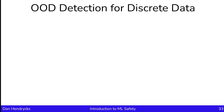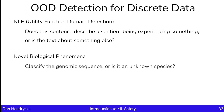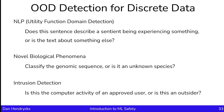One can also study out-of-distribution detection using discrete data. For example, in NLP we could try to determine the domain or provenance of a utility function—does the sentence describe a sentient being experiencing something, or is it about something else? The sentence 'I just got hurt' would have negative utility, while 'the color is red' doesn't describe any experience and would be rejected as anomalous. Another example is detecting novel biological phenomena, classifying genomic sequences or determining if a sequence is from an unknown species. And in the case of intrusion detection, the question is whether computer activity is from an approved user or an outsider.